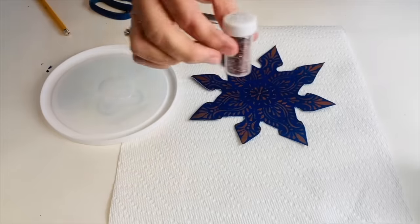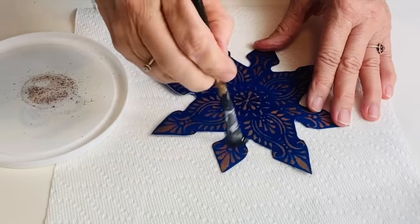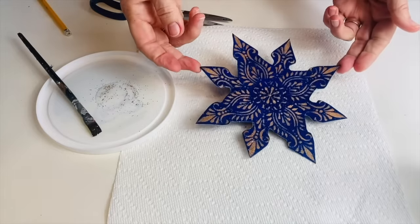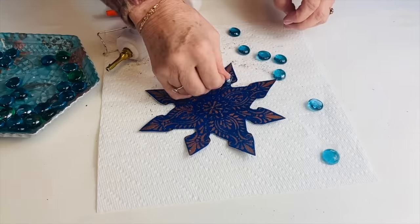I have some just regular Elmer's glue and I'm going to add to that some glitter and paint it all over my snowflake. Leave that to dry. I'm going to put a little dab of glue and then stick it on my snowflake.